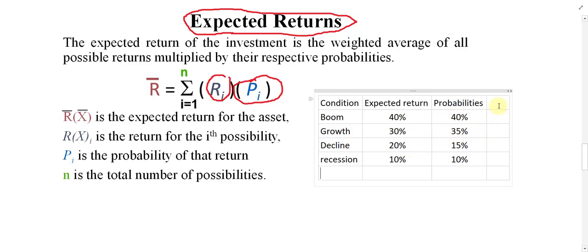When the finance manager is faced with this situation — different returns under different conditions, each with a probability — he uses the expected return formula: R̄ = Σ(R × P). Expected return can also be called the average return or the mean of the return. Using this formula, you can find the mean return from the project and tell your boss: on average, how much profitability can he expect from the project?